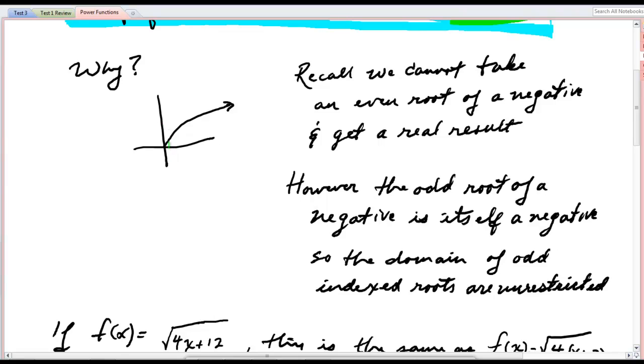And because of that, when we graphed y equals the square root of x, we got a function that only went off that way. It did not have even symmetry. It had an even index.